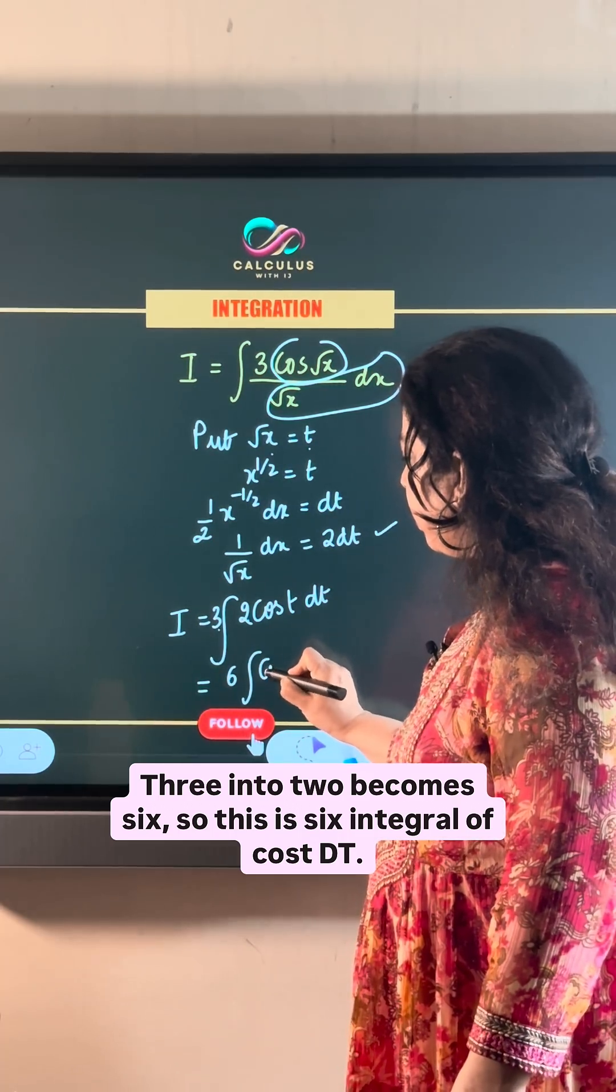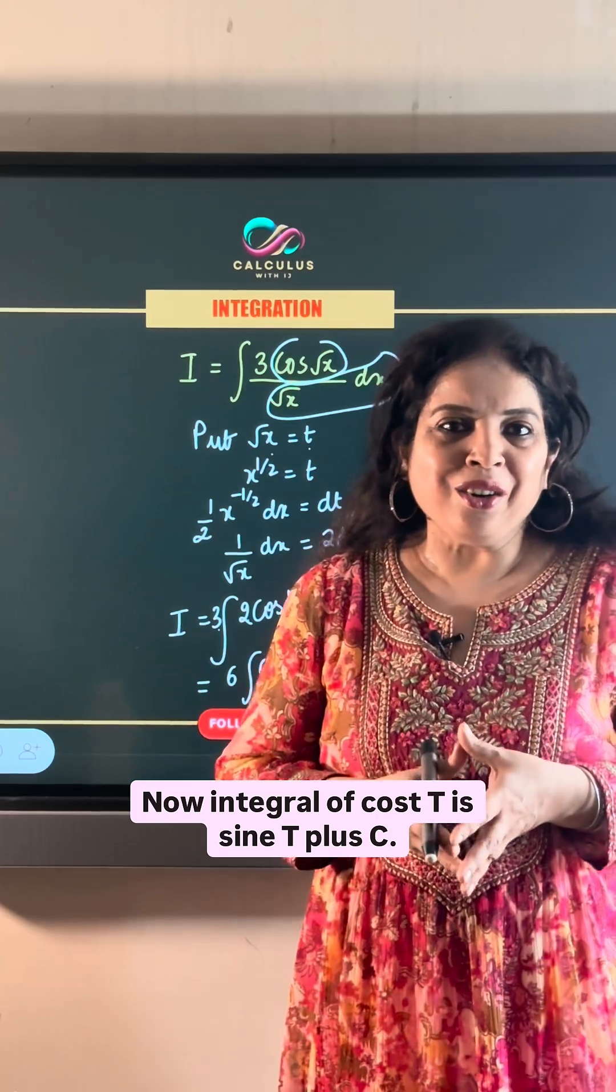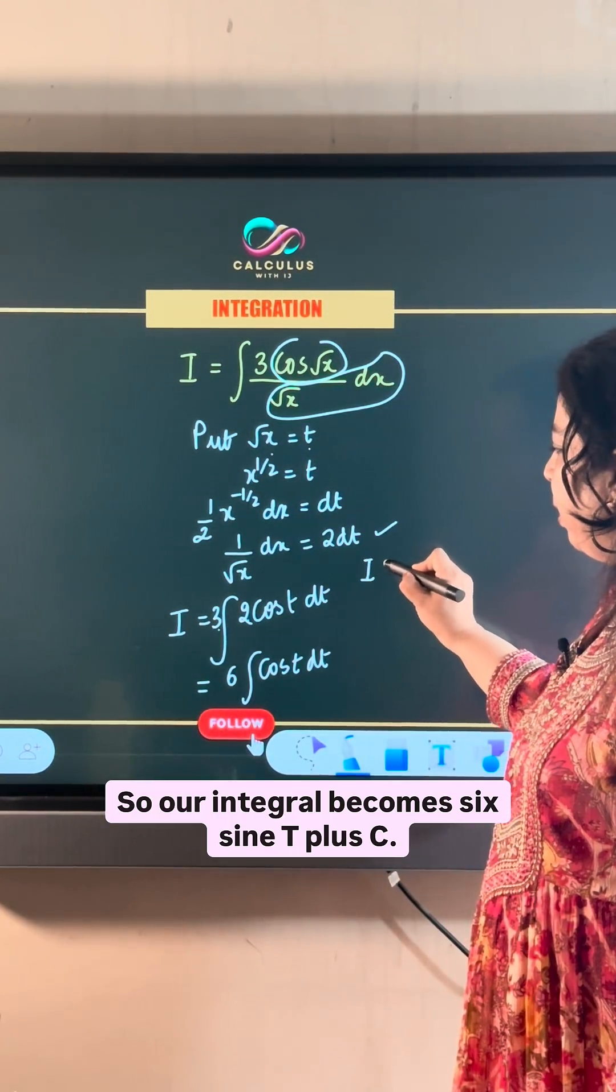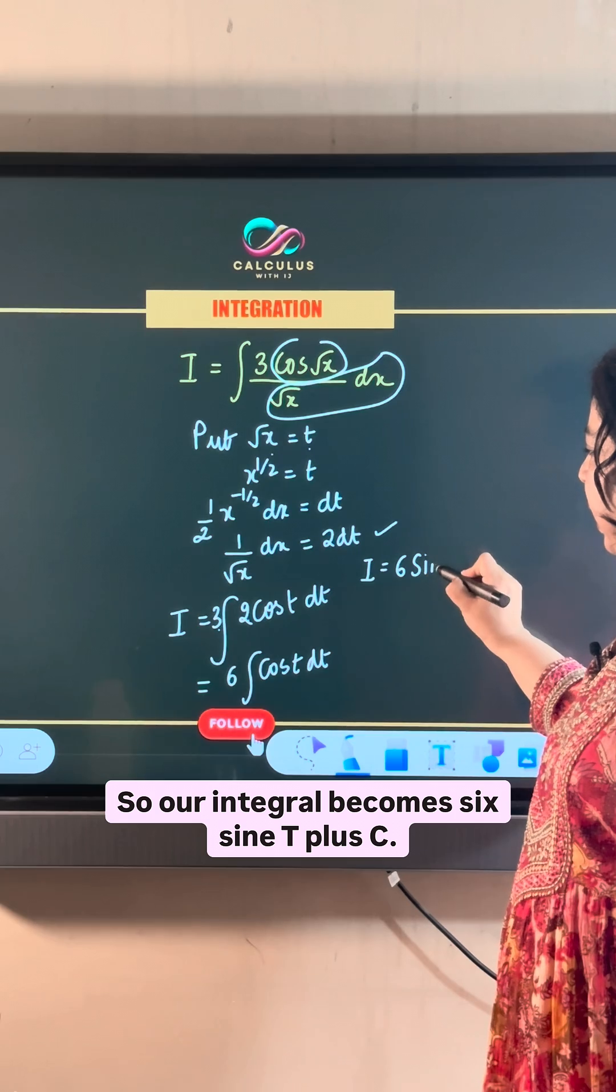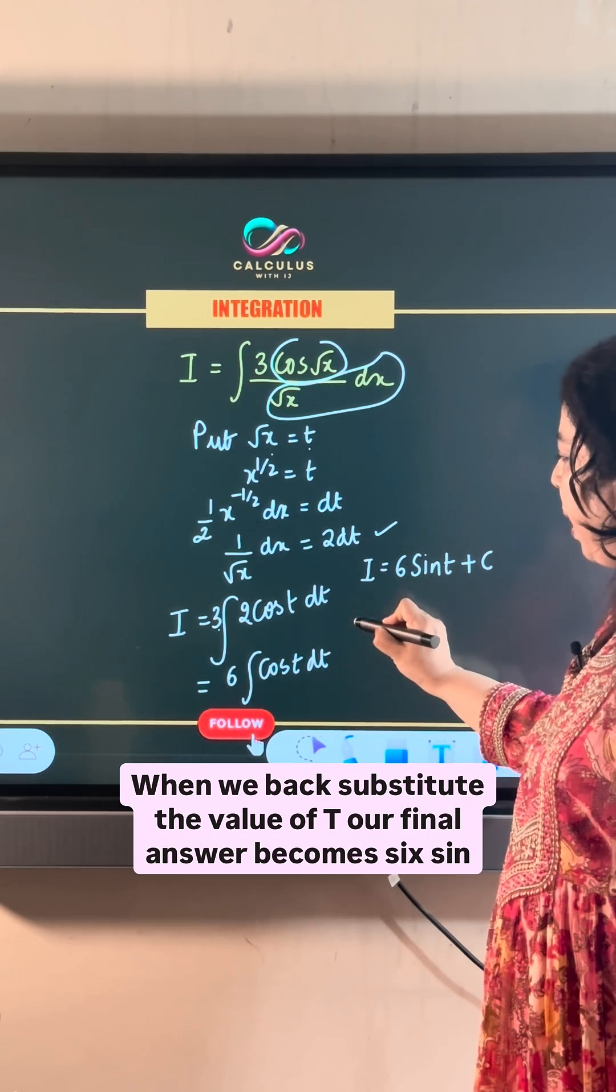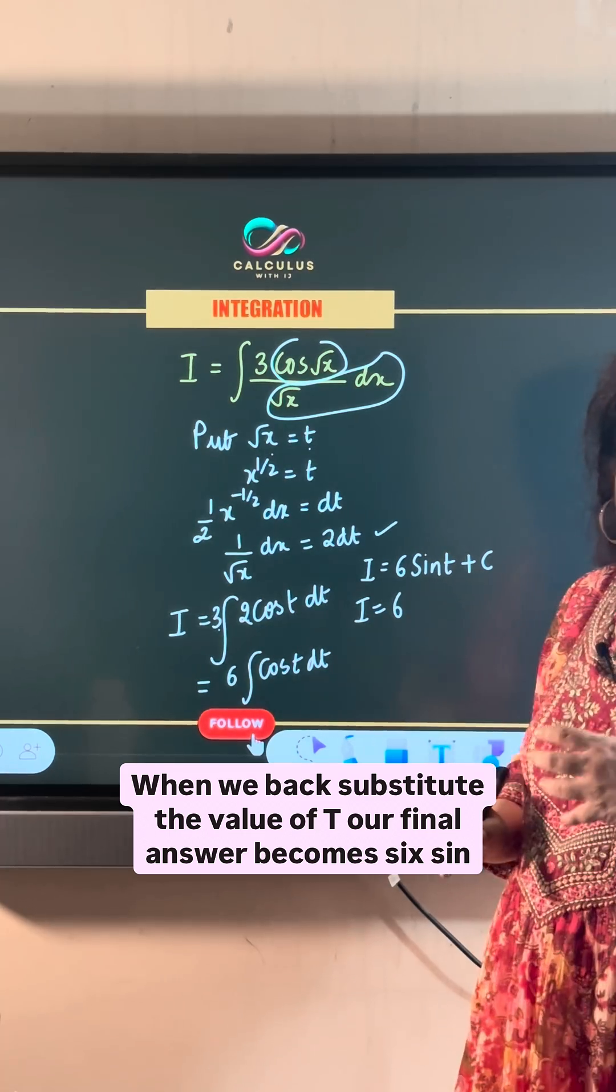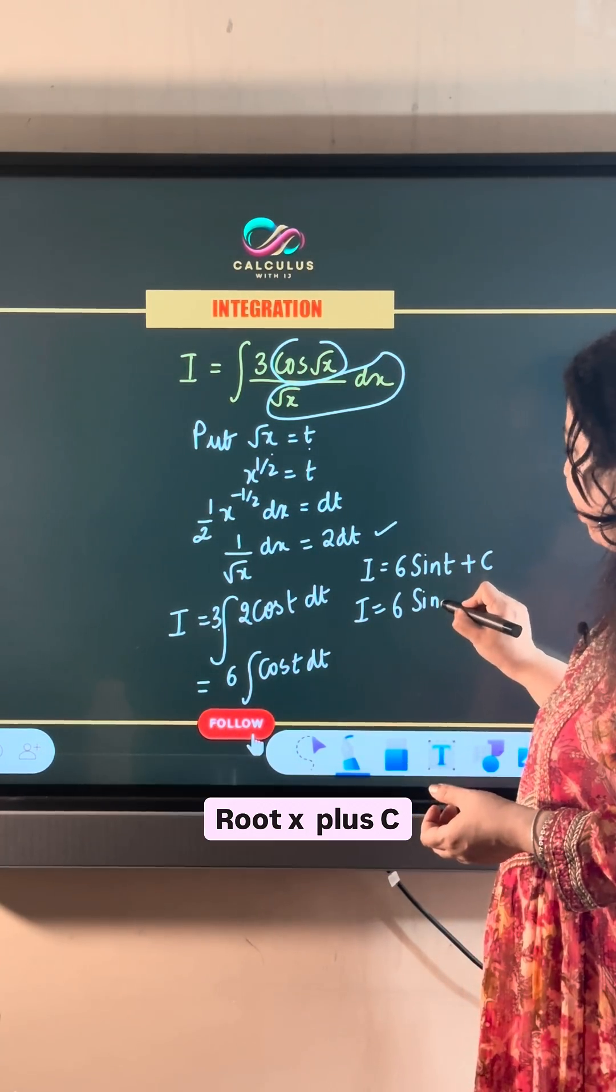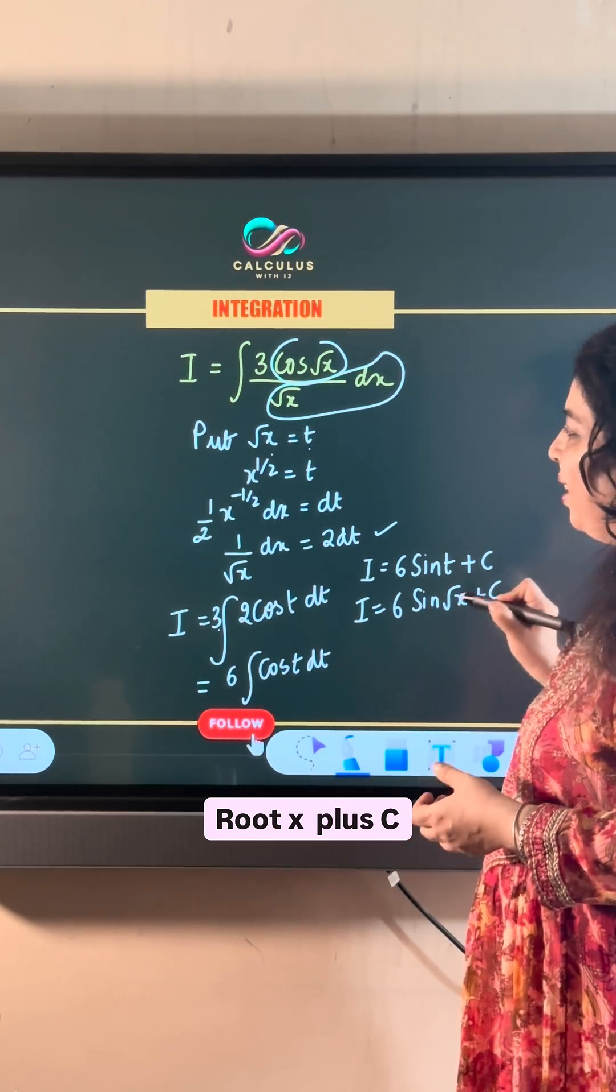So, this is 6 integral of cos t dt. Now, integral of cos t is sin t plus c. So, our integral becomes 6 sin t plus c. When we back substitute the value of t, our final answer becomes 6 sin root x plus c.